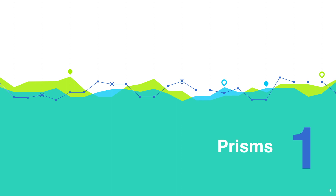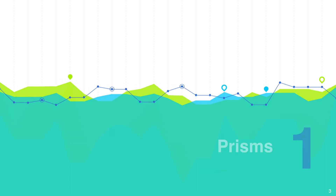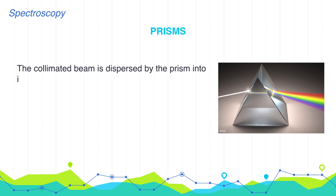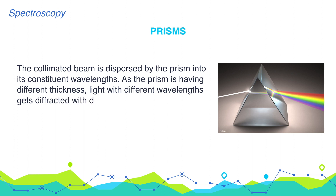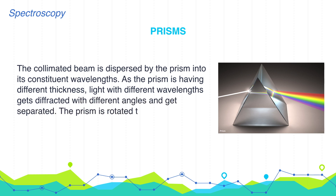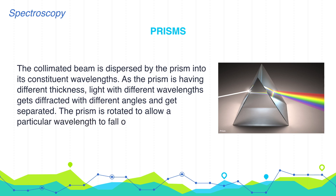Let's talk about prisms. The collimated beam is dispersed by the prism into its constituent wavelengths. As the prism has different thickness, light with different wavelengths gets diffracted at different angles and gets separated. The prism is rotated to allow a particular wavelength to fall on a focusing lens and then emerge out of an exit slit.